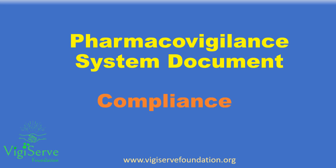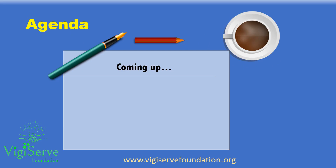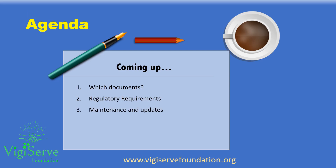Today, we will learn about the compliance requirements for pharmacovigilance system documents. We will first learn about the documents that are considered under the purview of pharmacovigilance system document. We will then learn about the regulatory requirements, followed by maintenance and update of the pharmacovigilance system document. Finally, we will learn about the role of this document in case of regulatory inspections.